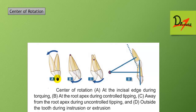If we are applying force at the incisal edge, it will result in torquing. If we are applying force at the root apex, it will be controlled tipping. If applied away from the root apex, it will result in uncontrolled tipping. And if force is applied outside the tooth, it will cause intrusion or extrusion.